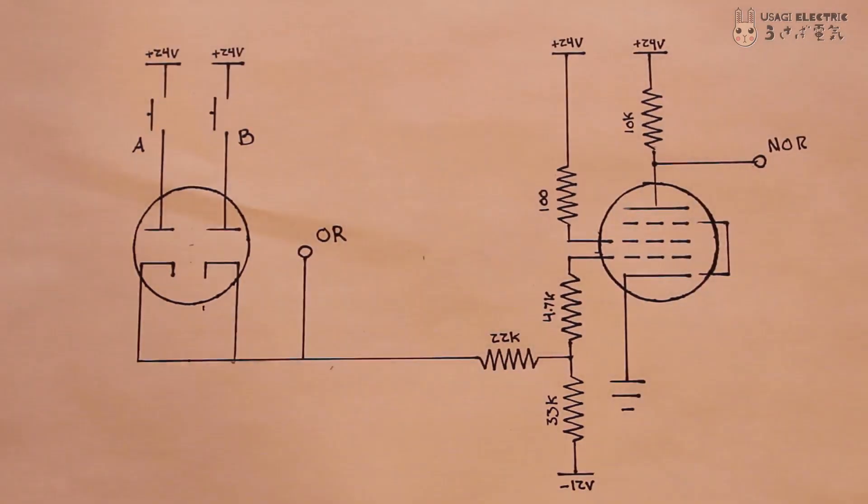In this schematic, there is a 6AL5 dual diode on the left. The two inputs go to the two separate plates within the tube. Both cathodes are tied together, and this output is the OR gate.